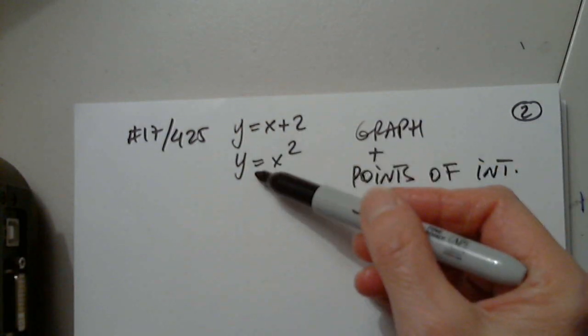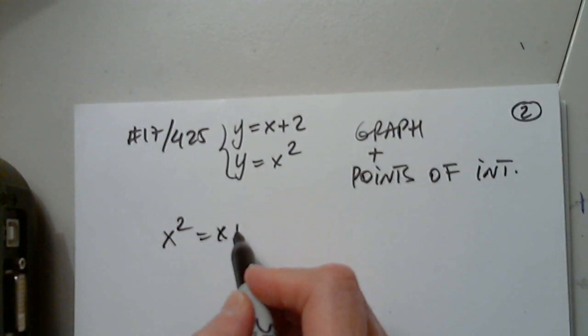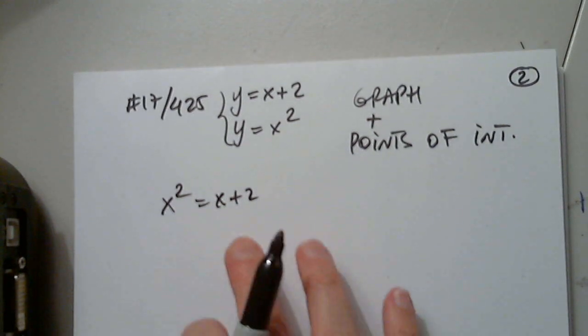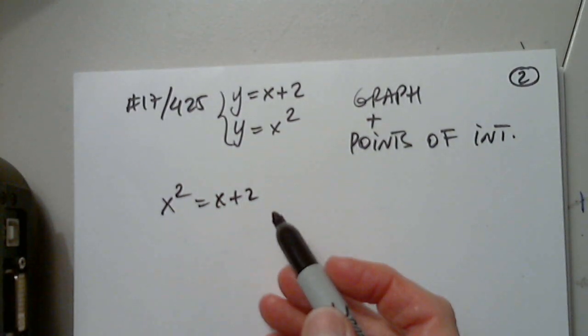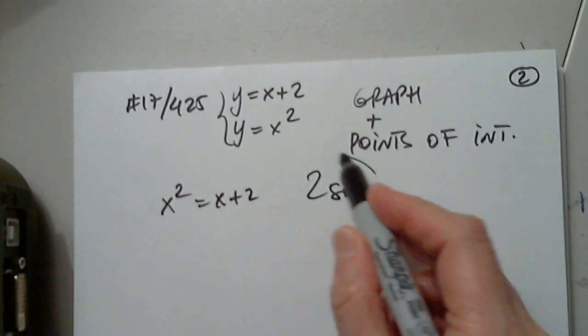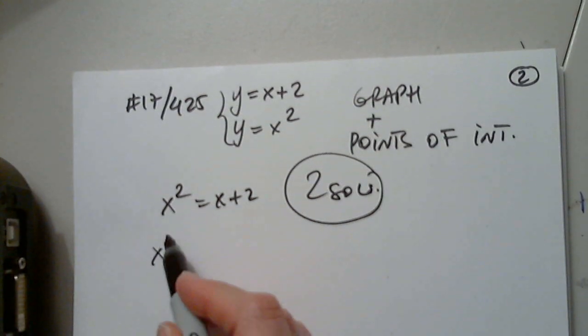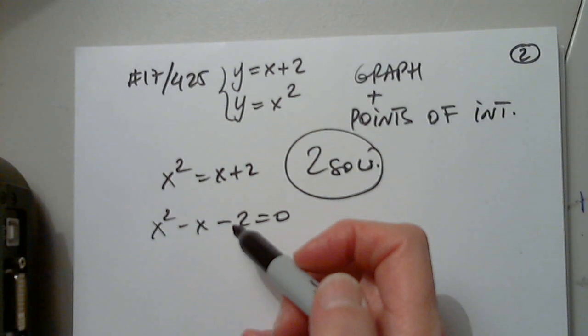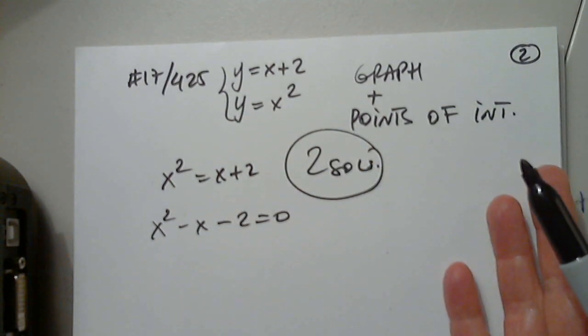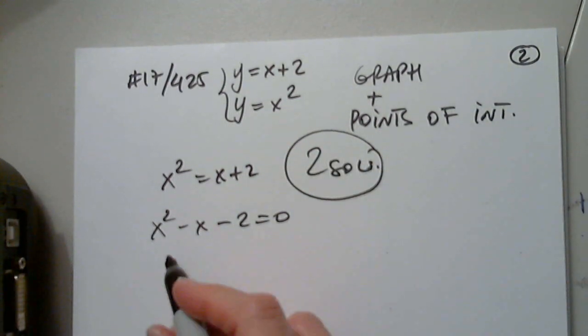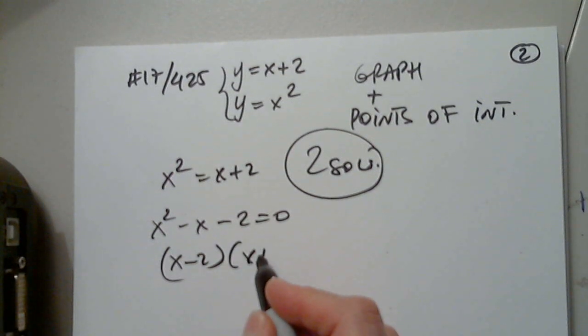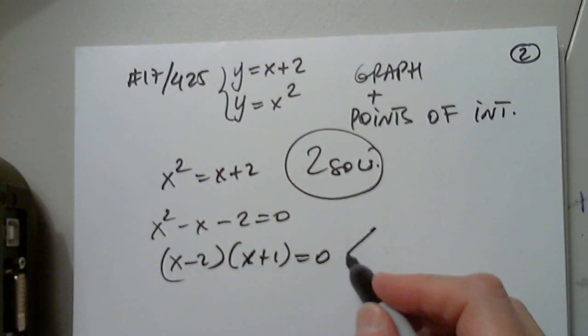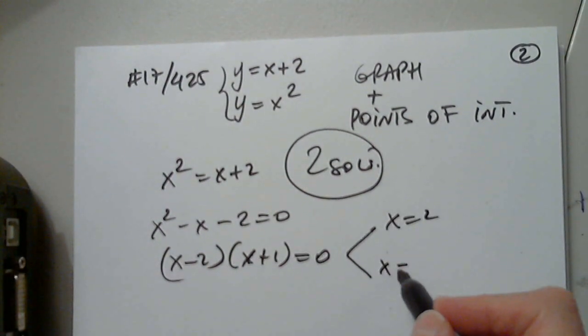Graph plus points of intersection. y equals this, y equals this. Obviously, I can set them equal to each other. Moving everything to one side is quadratic. Two solutions, please. x squared minus x minus 2 equals zero. You can use the feature of the calculator, that's fine at this point, and get the solutions. I prefer to factor, because it's too easy.